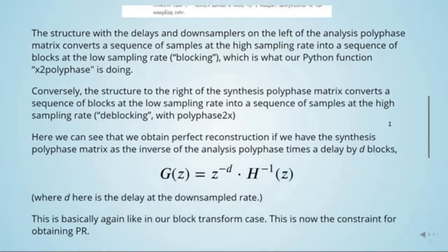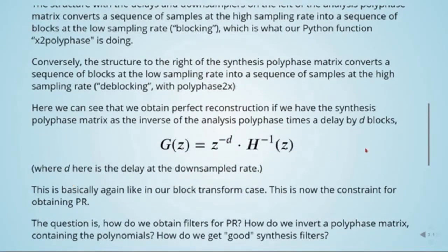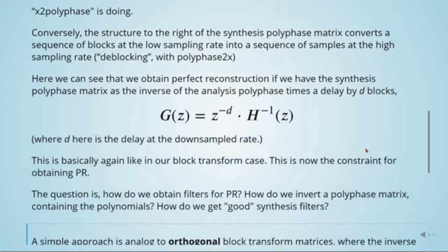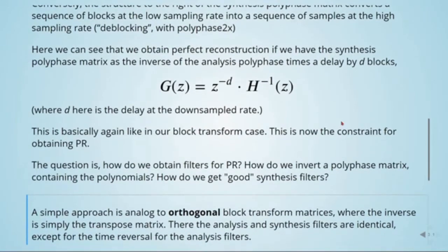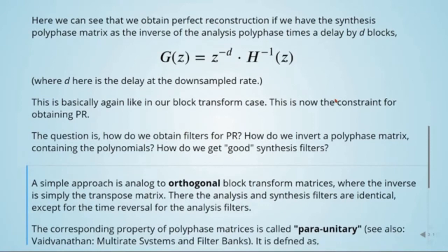We obtain perfect reconstruction if we have the synthesis polyphase matrix as the inverse of the analysis polyphase matrix, times a delay by D blocks. So here we have the inverse of the analysis polyphase and a delay of D blocks, where D is the delay at the downsampled rate. This is analogous to the block transform case, and is the constraint for obtaining perfect reconstruction. The question is: how do we obtain filters for perfect reconstruction, how do we invert a polyphase matrix containing polynomials, and how do we get good synthesis filters?